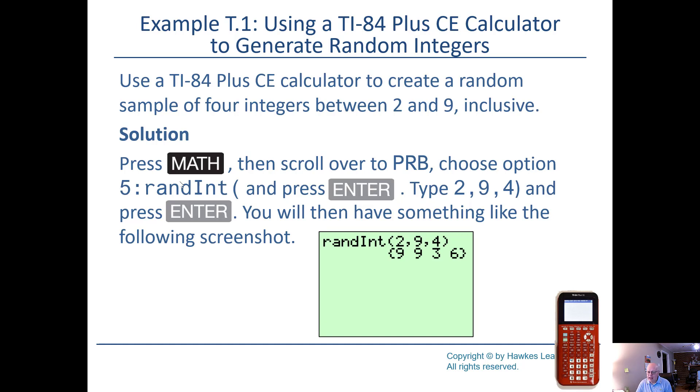And you'll get something like this. You can see the function on the top in that green square. And on the second line, you can see the four numbers that this particular time came up. Now, it could be something a little bit different if you do the same thing again. In fact, if you cursor up with your calculator, highlight that random function again, hit enter again, you'll get four different numbers.